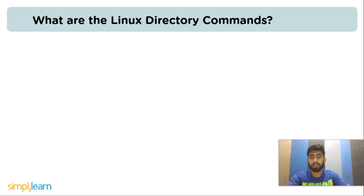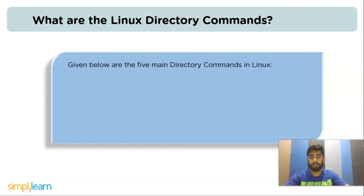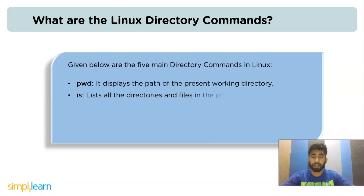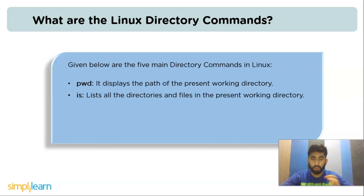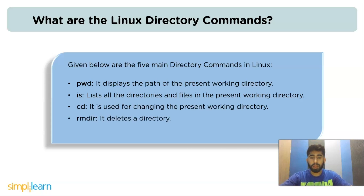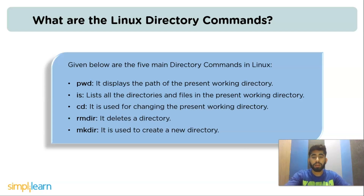The next question is: what are Linux directory commands? The five main directory commands in Linux are: pwd — displays the path of the present working directory; ls — lists all directories and files in the present working directory; cd — used for changing the present working directory; rmdir — deletes a directory; and mkdir — used to create a new directory, also known as make directory.